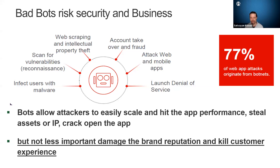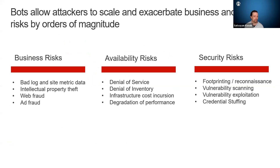Most web attacks actually originate from botnets. This affects you both in a business sense and in a deployment sense. We can categorize this as business risk — bad logs and site metrics, intellectual property theft, web fraud, ad fraud — and availability risk: denial of service, denial of inventory, infrastructure cost incursion. That's even more pronounced in cloud deployments. Once you have something in the cloud, it's going to get scanned, and script kiddies going after low-hanging fruit are going to target you.